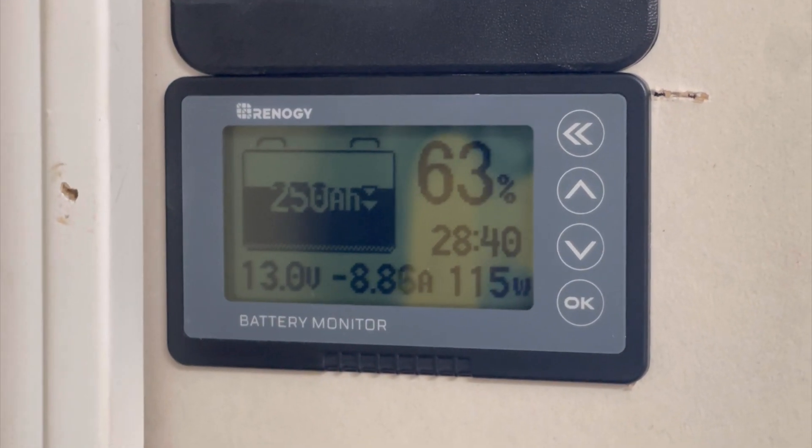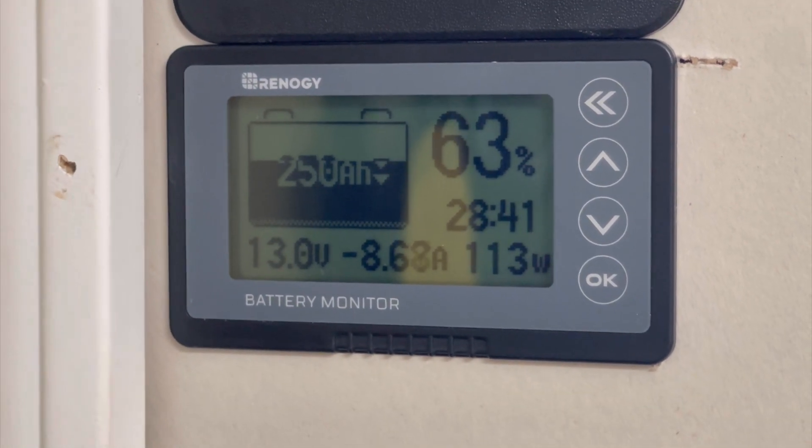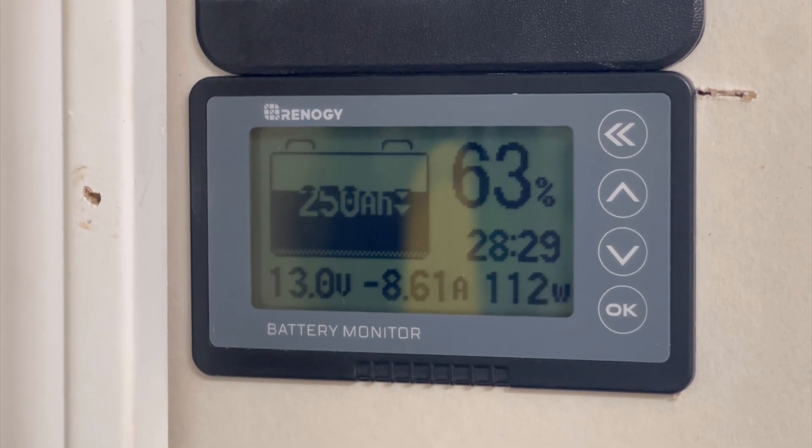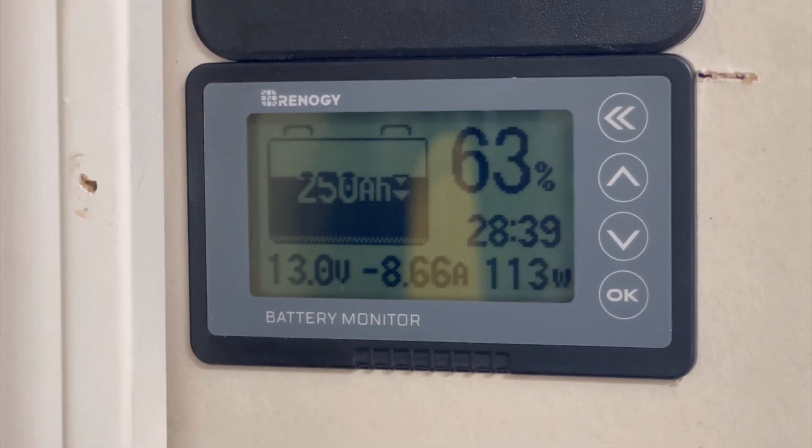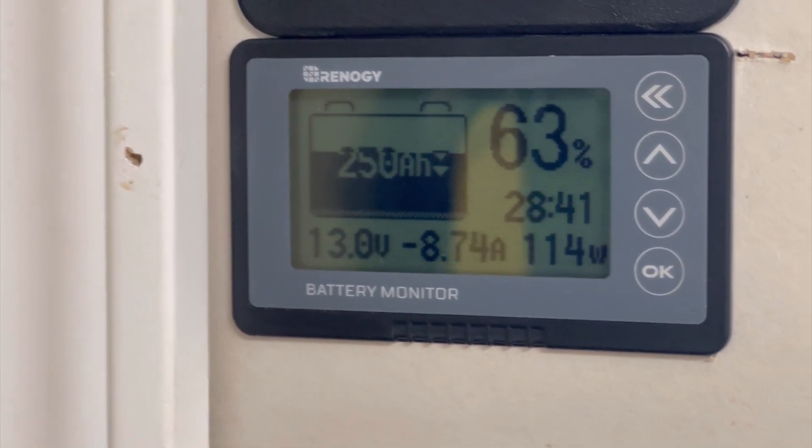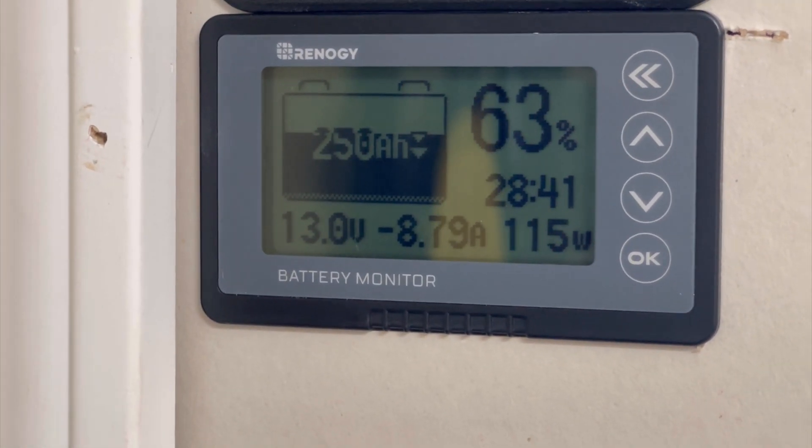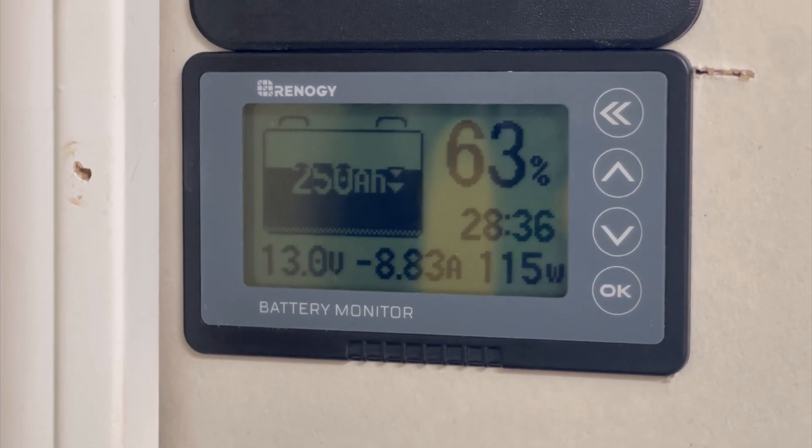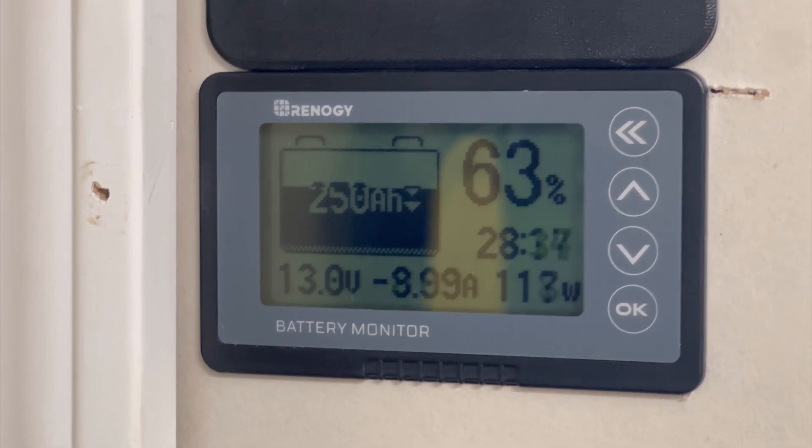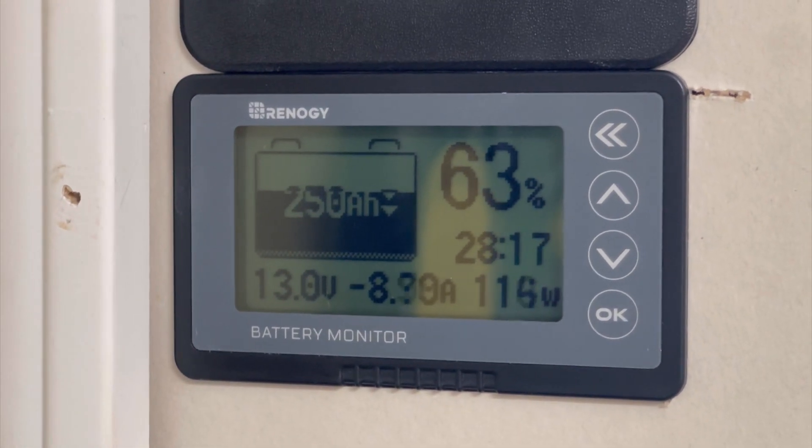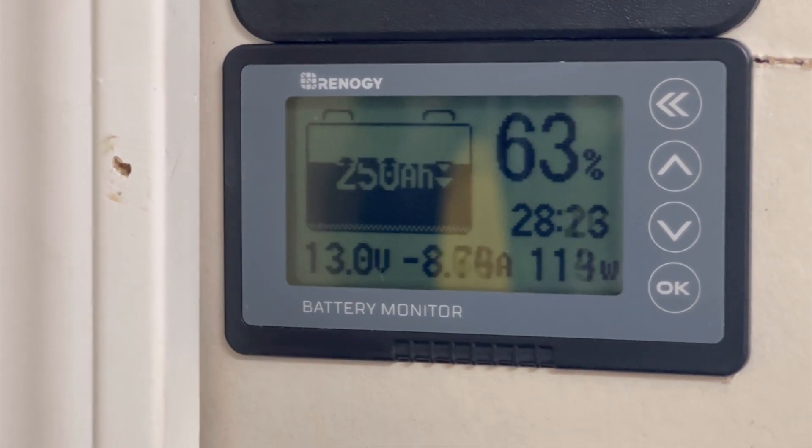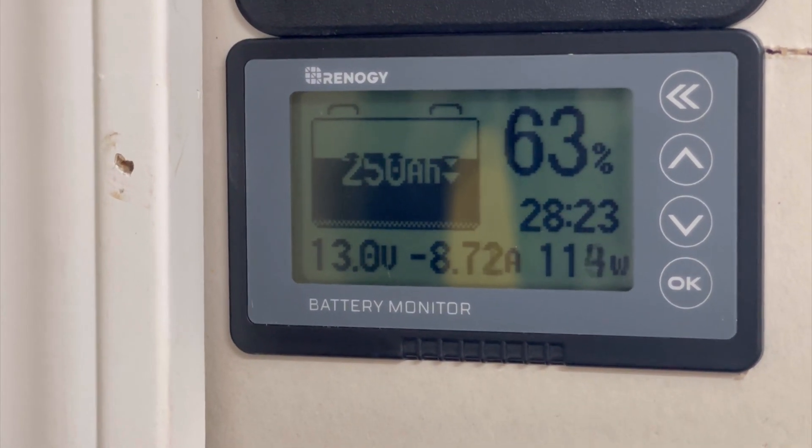Right now we have one thing running off the system, a deep freezer in defrost mode, drawing down about 100 watts. Right now with the sun directly above the solar panels, just 10 minutes after noon, we should be getting 500 plus watts. We noticed there was a slight draw on the system, about a one amp draw, for some reason.